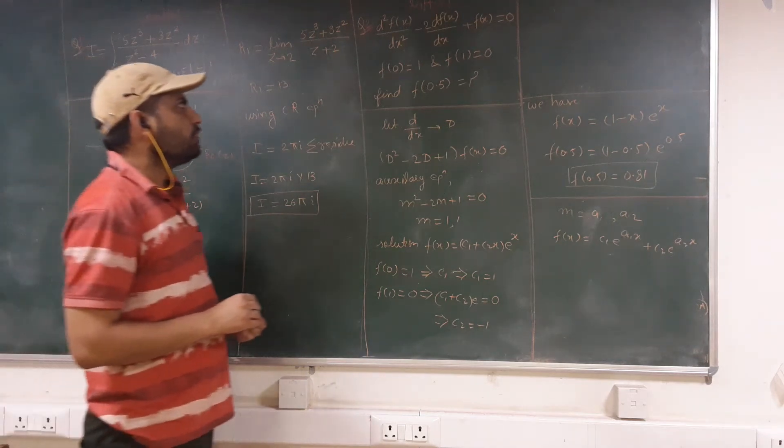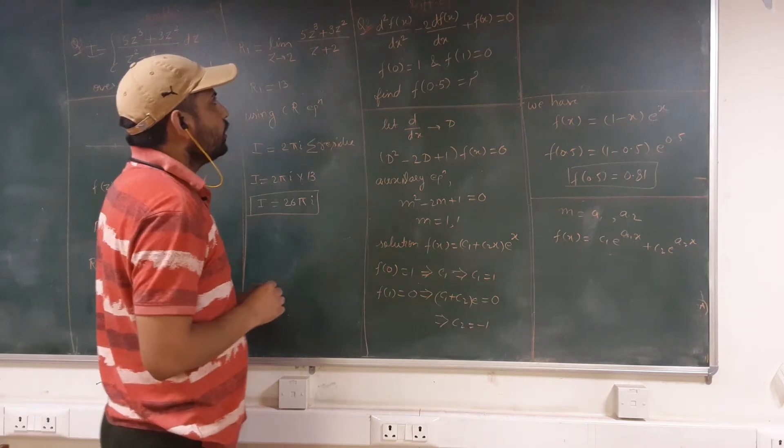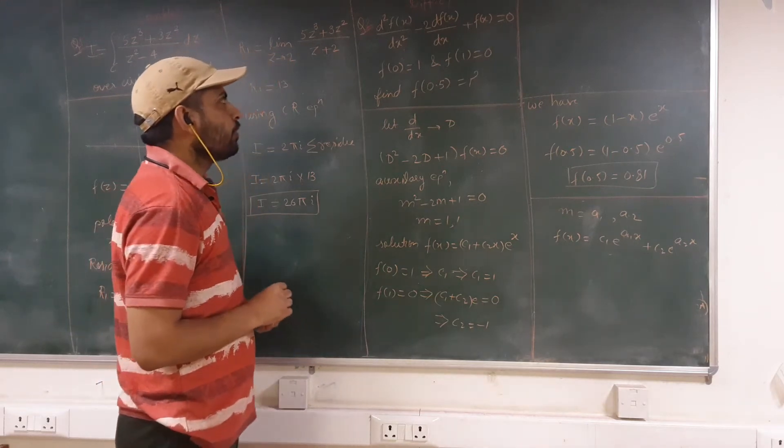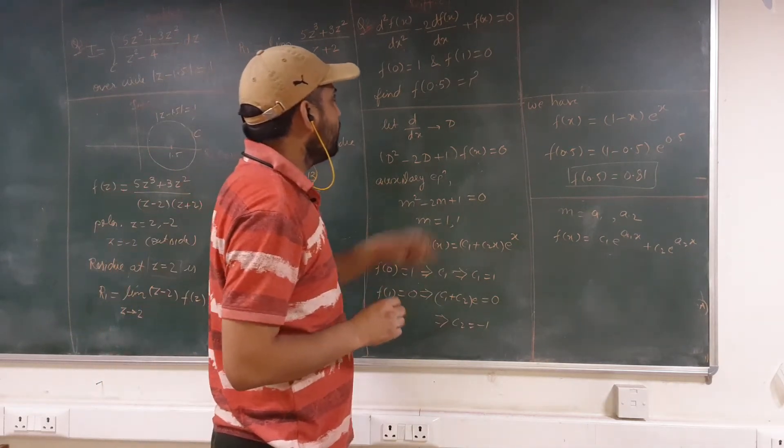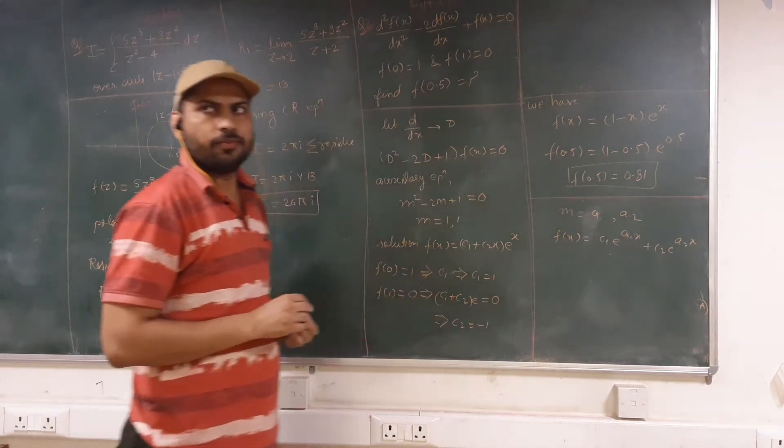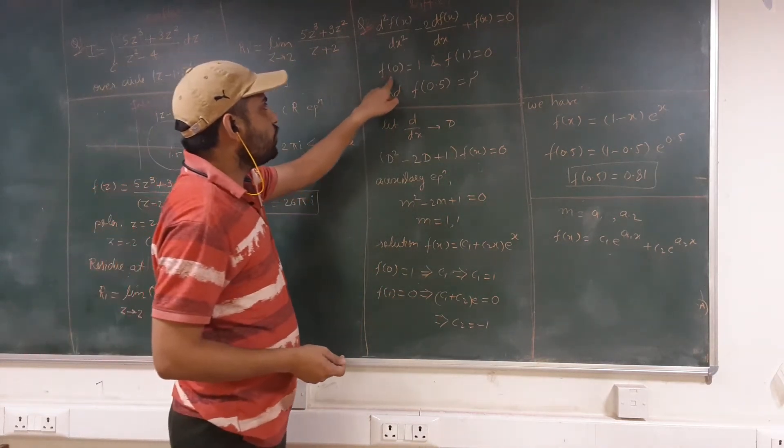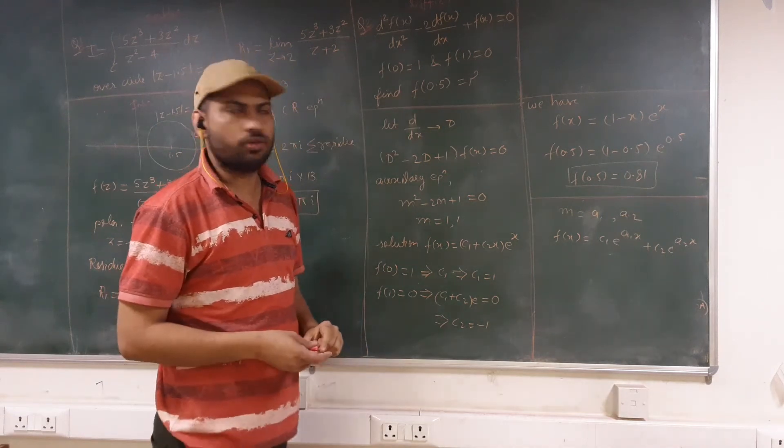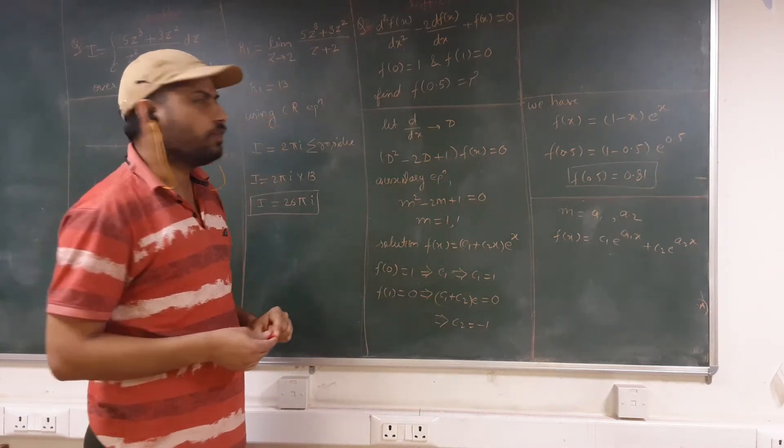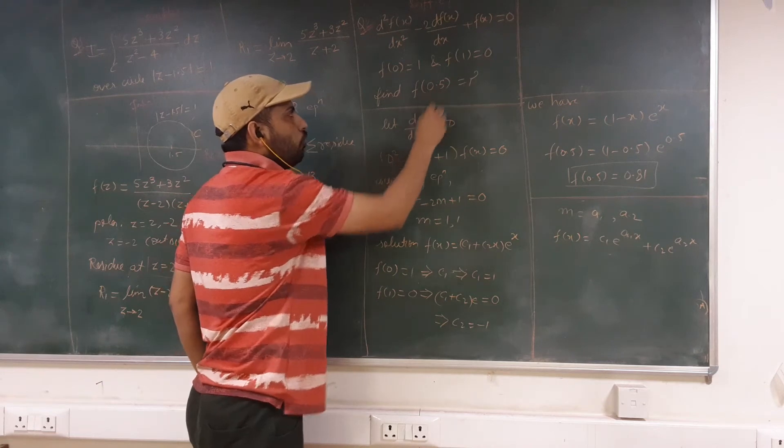Next question is from differential equation and the question is given as d²f(x)/dx² - 2df(x)/dx + f(x) = 0. In this, the boundary conditions are given to you as f(0) = 1 and f(1) = 0. And we have to find the function value at x = 0.5.